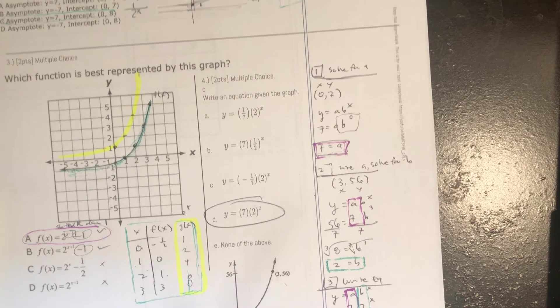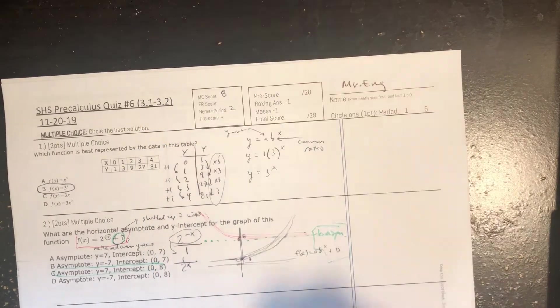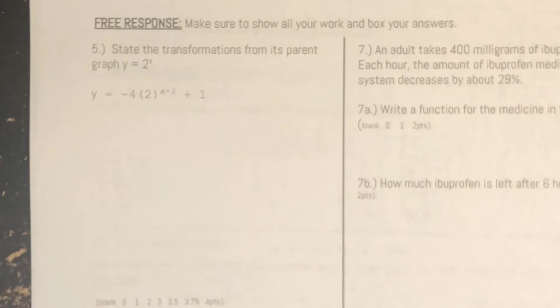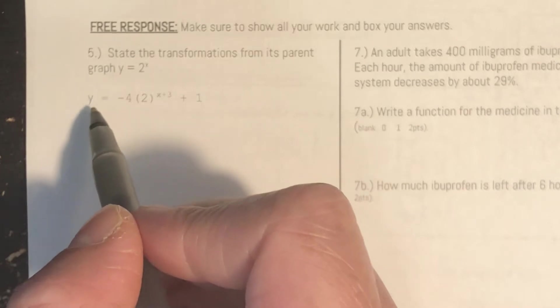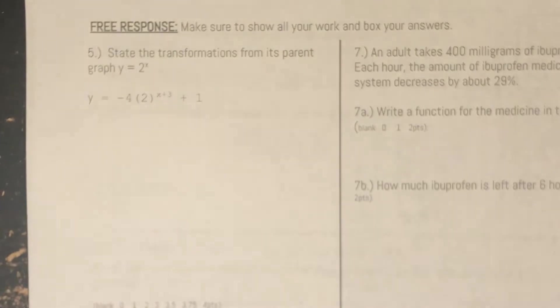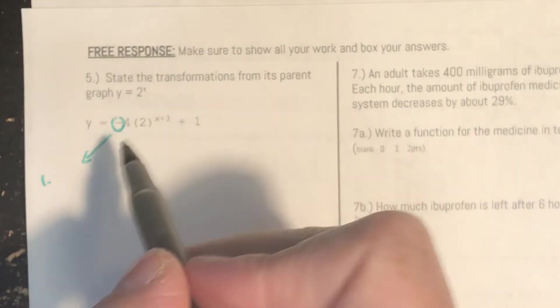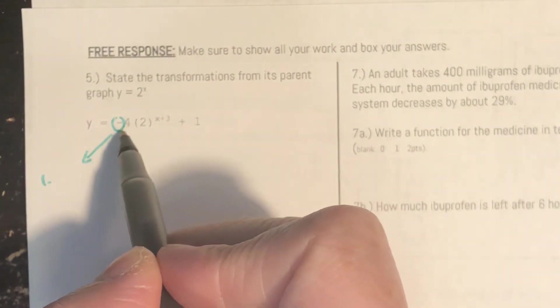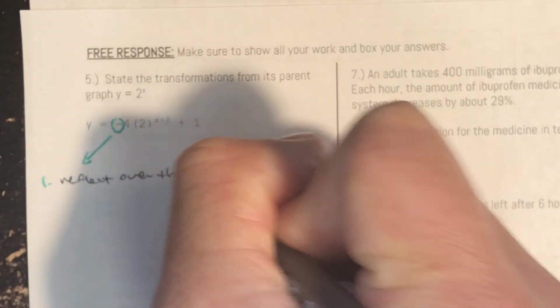So for 4 multiple choice, that would be 8 points and then 2 points for name and period. Alright Question number 5: State the transformations from its parent graph y equals 2 to the x power. Okay see if I can color code this. So basically the first observation is you have a negative sign in front. This is going to reflect over the x axis.